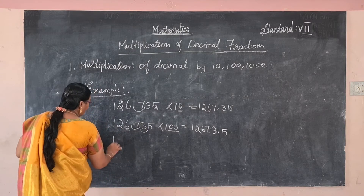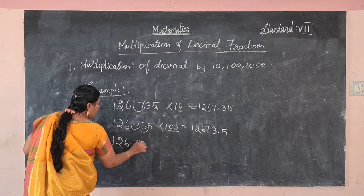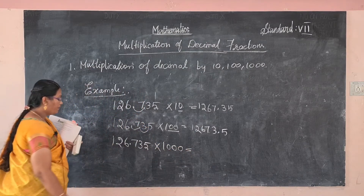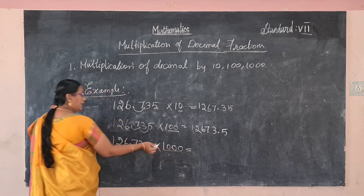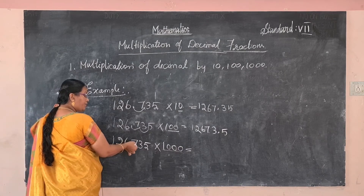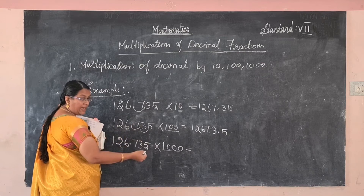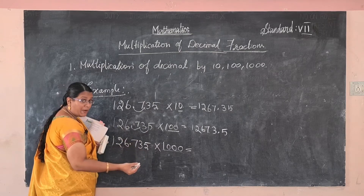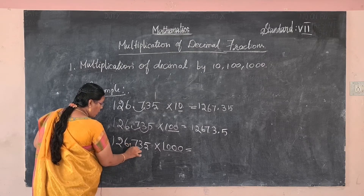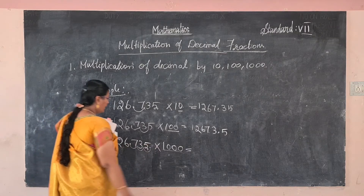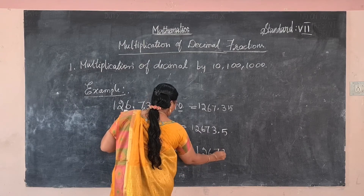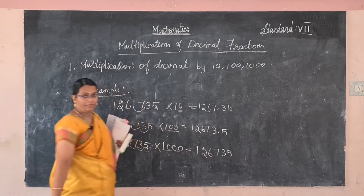Next, multiplying by 1000: how many zeros? Three zeros. The decimal point shifts to the right side by three decimal places — one, two, three. The answer is 126735, which is one lakh twenty-six thousand seven hundred and thirty-five.